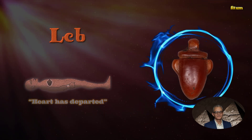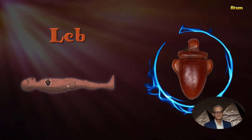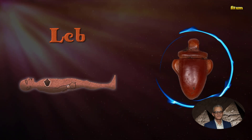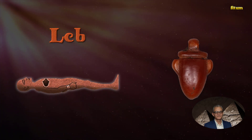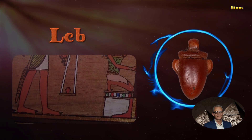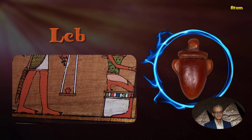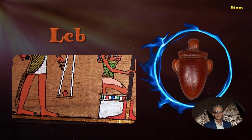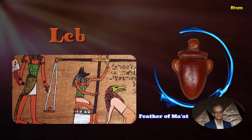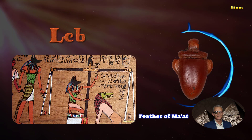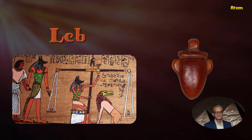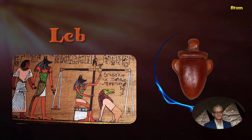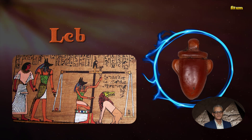It was the only organ that was not removed from the body during mummification. In the Book of the Dead, it was the heart that was weighed against the feather of Maat, to see if an individual was worthy of joining Osiris in the afterlife.